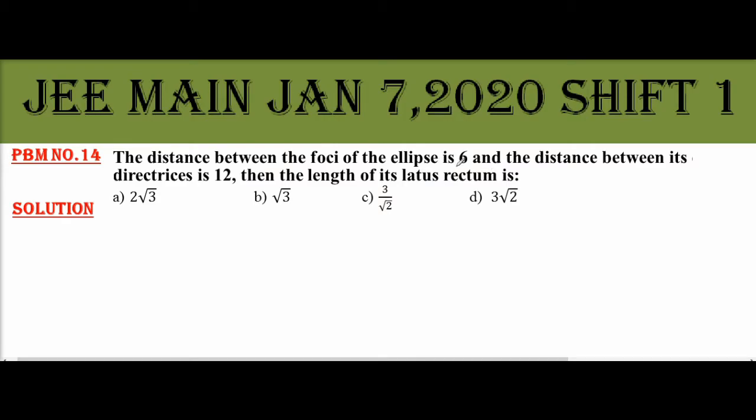If you don't understand the formula, the distance between the foci of the ellipse is 6. The distance between the foci is 2ae equals 6, that gives me ae equals 3.